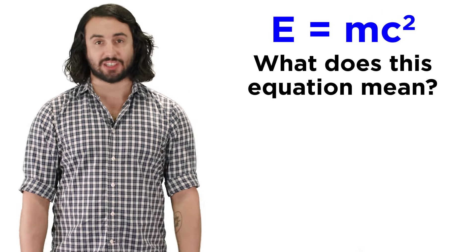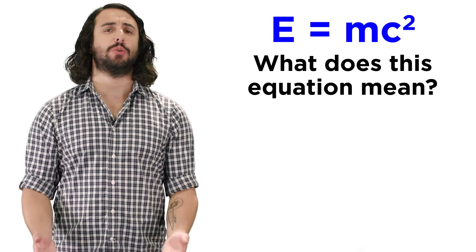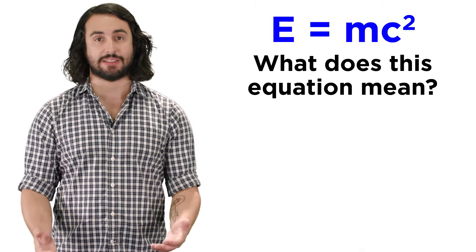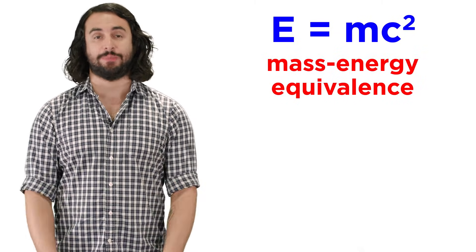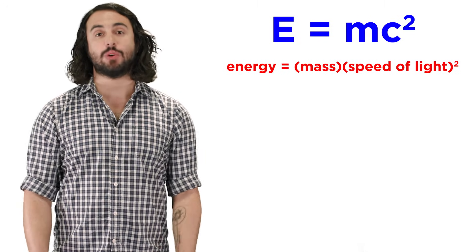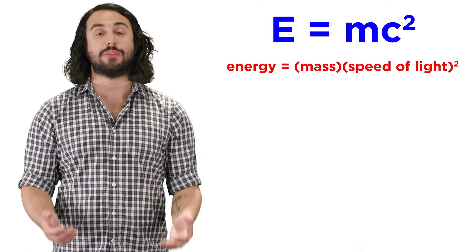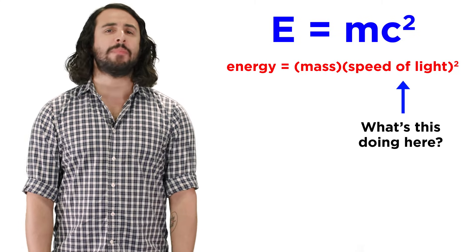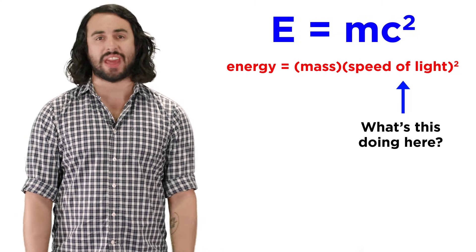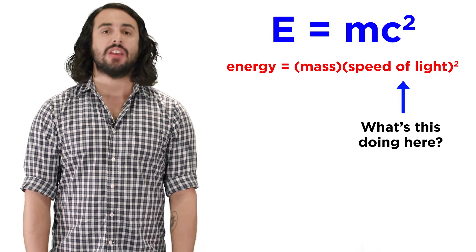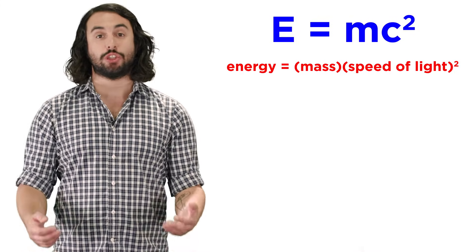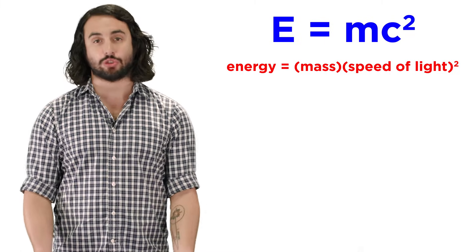Almost everyone can recite this equation from memory, but far fewer know precisely what it means. It outlines the concept of mass energy equivalence, stating that energy is equal to mass times the speed of light squared. One may wonder what the speed of light has to do with energy and mass, especially since light has no mass. Nevertheless, we will find that the two are inextricably intertwined.